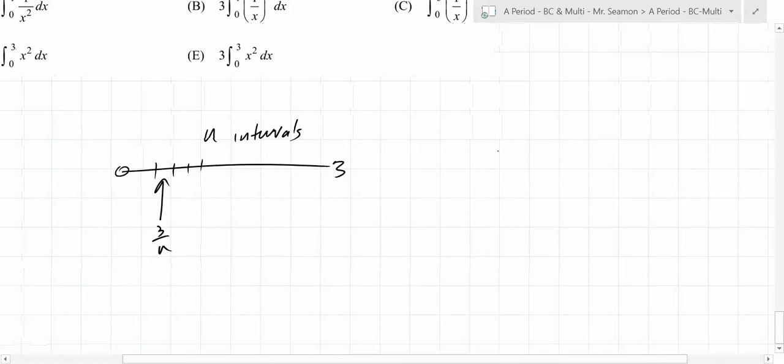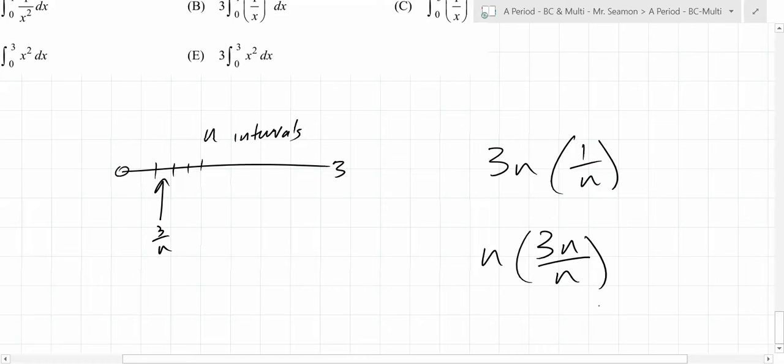0 to 3 got chopped up into 3n intervals. If there's 3n intervals, and each one of them is 1 over n, that's the same thing as n intervals that are 3 over n wide. What's 3n times 1 over n? 3. This is the same product. Instead of having n intervals that are all 3 over n wide, they did 3n intervals that are all 1 over n wide. You're going to infinity, so they're all getting infinitesimally small, so they're equivalent.